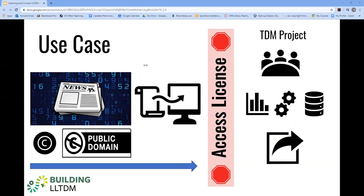The TDM scholar has an online subscription to this particular newspaper and receives daily emails featuring the day's articles. Additionally, one national paper in particular that was the subject of some of the scholar's research provides access to the historical newspaper via a separate agreement, which is not part of the daily circulation agreement.